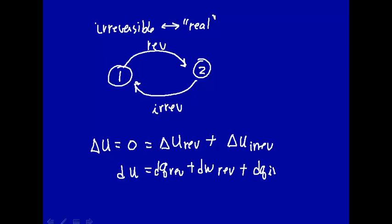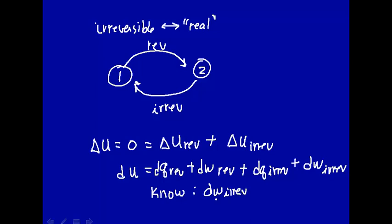Now, we know from everyday experience — from our Carnot engine, PV expansion, and so on — the general statement that dw irreversible, the amount of work you can get out from an irreversible process, is always less than dw for a reversible process. In other words, the most amount of work you can get out is by going through a reversible process. Any work you get out from an irreversible process is less than that.